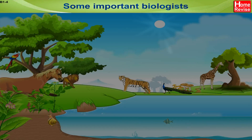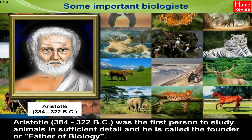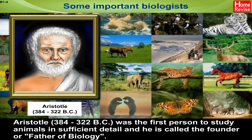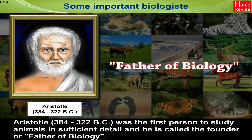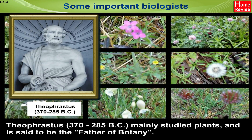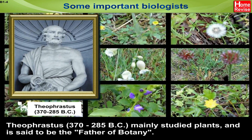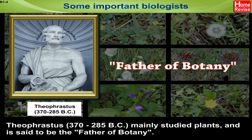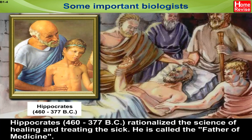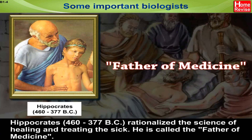Some Important Biologists. Aristotle (384–322 BC) was the first person to study animals in sufficient detail and he is called the founder or father of biology. Theophrastus (370–285 BC) mainly studied plants and is said to be the father of botany. Hippocrates (460–377 BC) rationalized the science of healing and treating the sick. He is called the father of medicine.